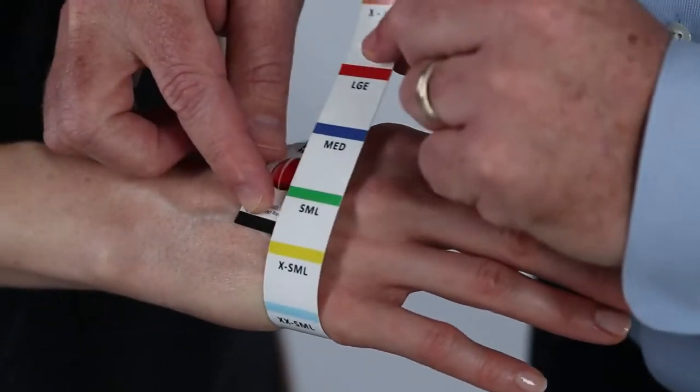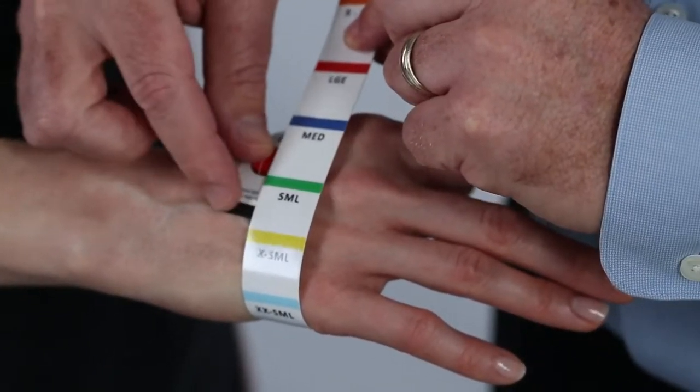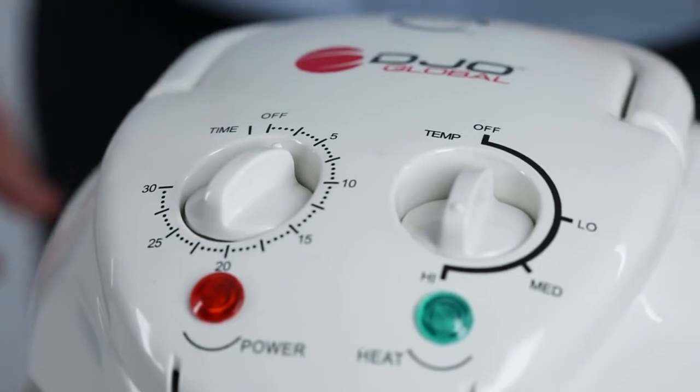Application of the Short Thumb Spica 2. Use the Exos measuring tape to select proper brace size. Heat the STS-2 for 3 minutes.